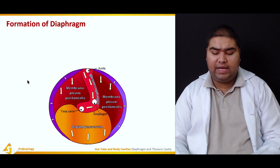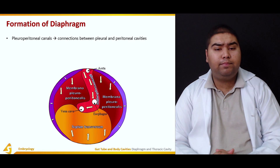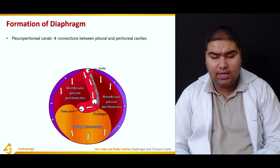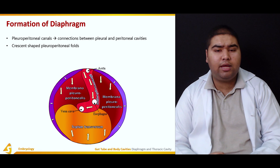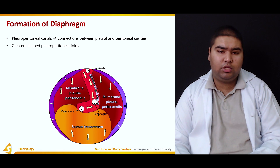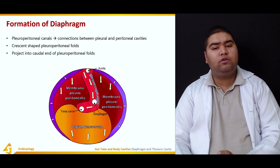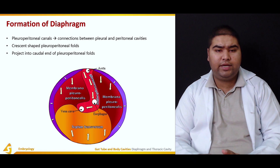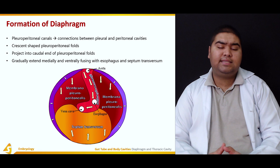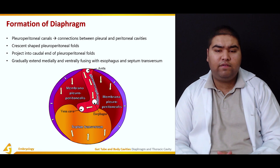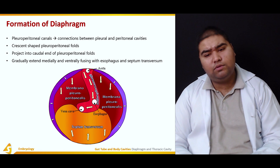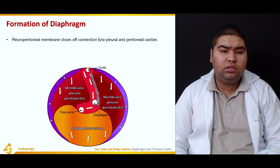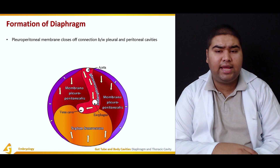Now, the formation of the diaphragm. The pleuro-peritoneal canals are the connection between the pleural and peritoneal cavities. There are crescent-shaped pleuro-peritoneal folds which encroach on the thoracic cavity, projecting into the caudal end of the pleuro-peritoneal canals. Gradually they extend medially and ventrally, fusing with the esophagus and septum transversum.